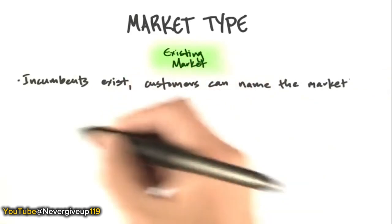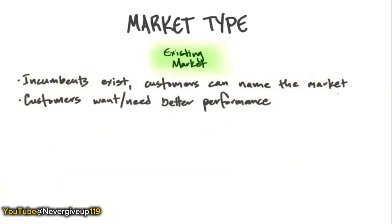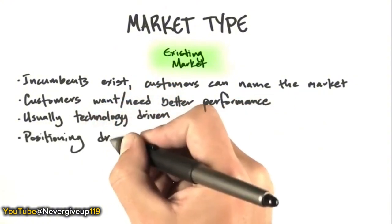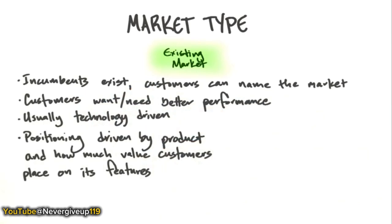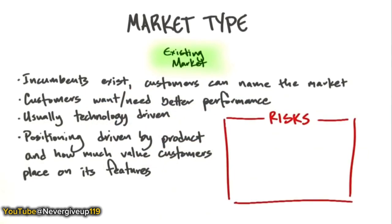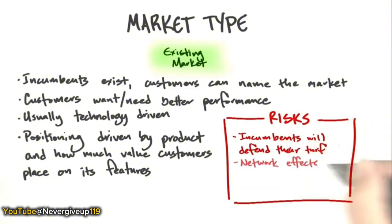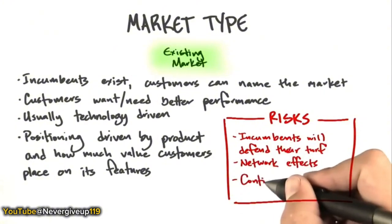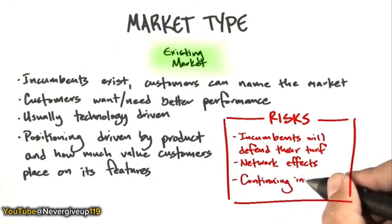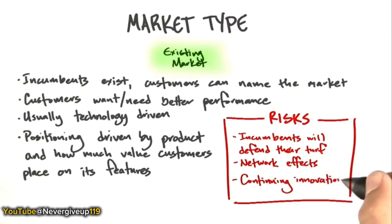In an existing market, incumbents exist, customers can name the market, customers want or need better performance, and it's usually a technology-driven play. Positioning is driven by the product and how much value customers place on its features. The risk is thinking that incumbents are dumb — typically incumbents will defend their turf. Remember the network effects of an incumbent: it's not only about their product, but all the ancillary services and third-party offerings in their catalog. Before you jump into an existing market, look at the innovation rate of the incumbents.